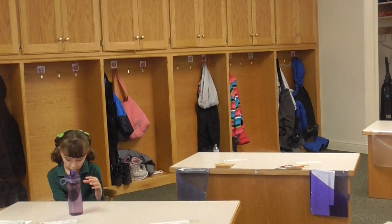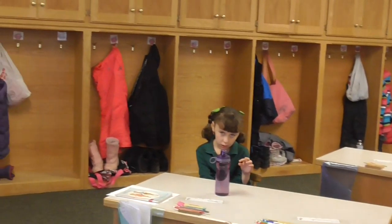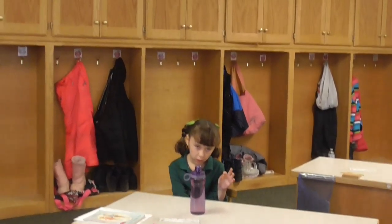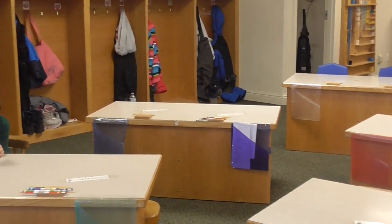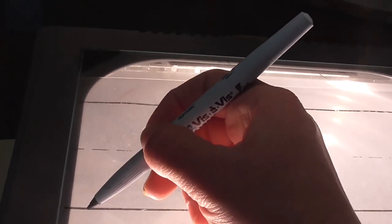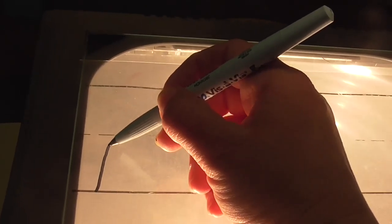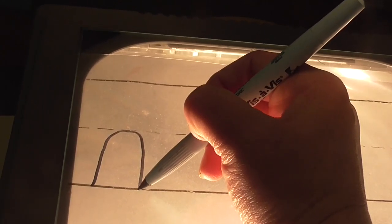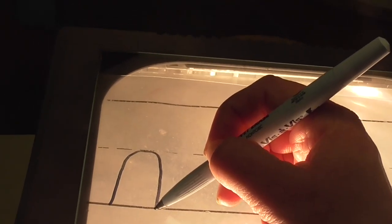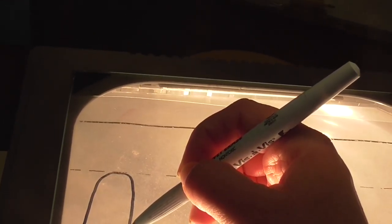So this stroke is one of our strokes that we've already learned, but guess what Rosie, we have to write it half size. Watch this: we start at the bottom bass line. Can you say bottom bass line? Good. We go up, up, up, touch the middle dotted line, stroke, touch the bottom bass line. Then we only go up halfway.